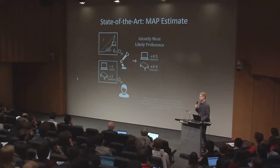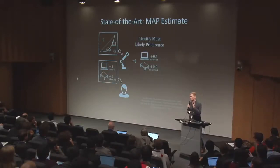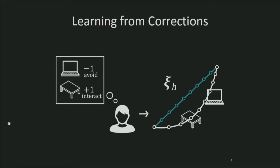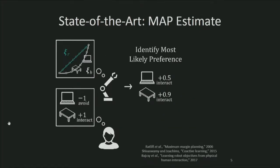Within the state of the art, the robot learns the most likely human preferences by comparing the original and corrected trajectories. Here the human has intentionally corrected the robot to move directly over the table, and as an unintended but unavoidable side effect, the robot also moves closer to the laptop. A robot learning the most likely human preferences incorrectly believes that it should interact with both the laptop and table, even though the human actually wants the robot to avoid the laptop.